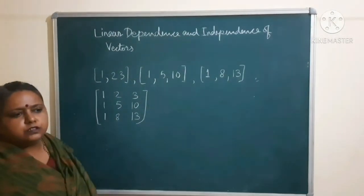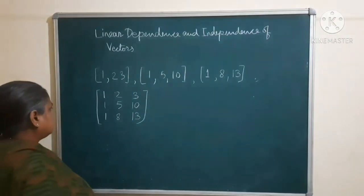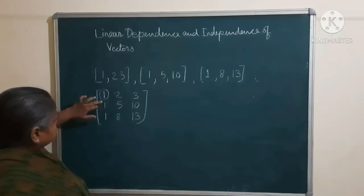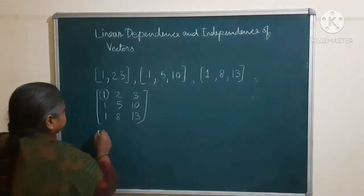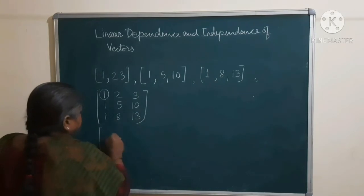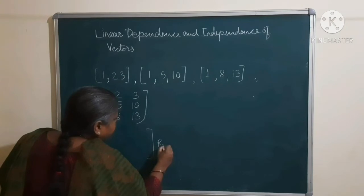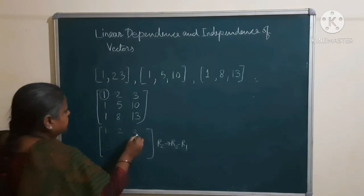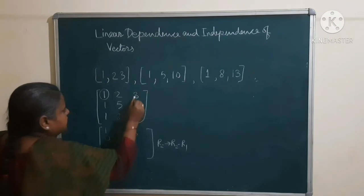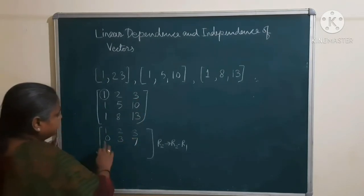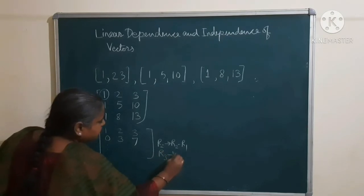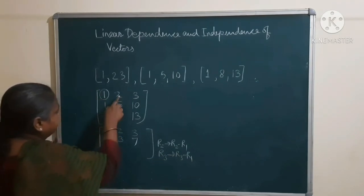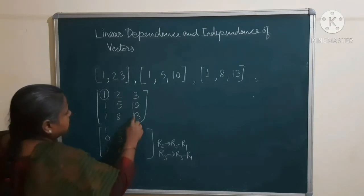For this, we do elementary row operations. Here, 1 is a pivot point, so we make the entries below the pivot point equal to 0. We take the operation R2 becomes R2 minus R1, giving (0, 3, 7). And R3 becomes R3 minus R1, giving (0, 6, 10).